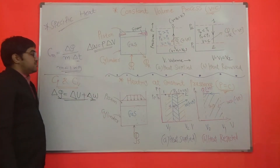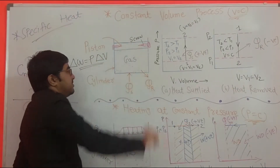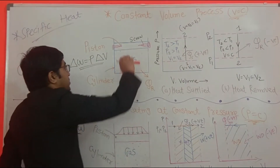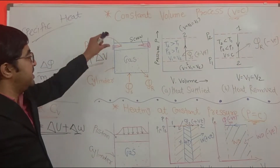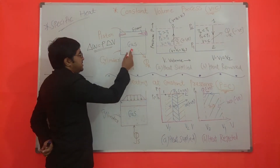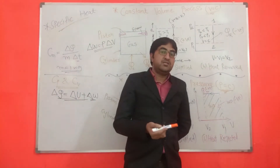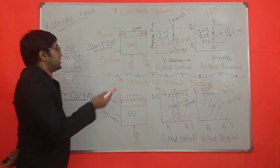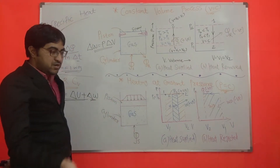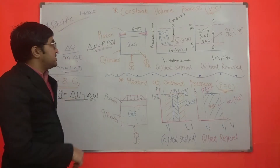In the constant volume process, we consider a cylinder with a piston. This piston is fixed with some screw, fixture, or locking device, so there is no movement of the piston — it remains in a fixed position. Qs is the heat supplied to the vessel and Qr is the heat rejected. When we supply heat energy from an external source like a stove, the temperature and pressure of the gases will increase.